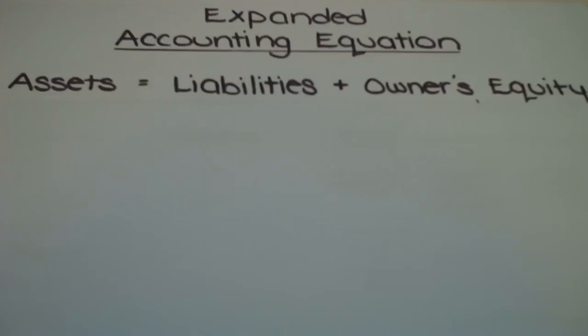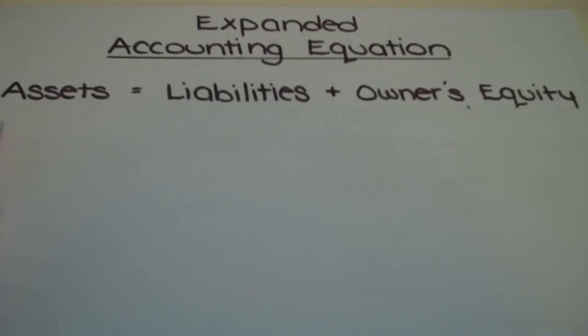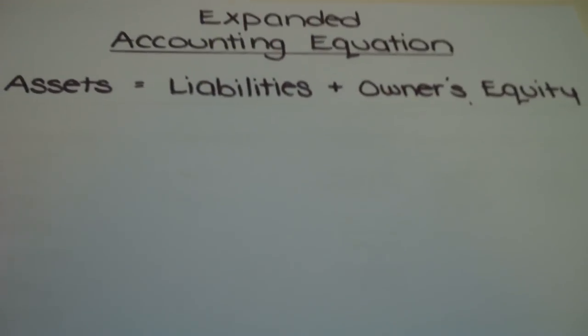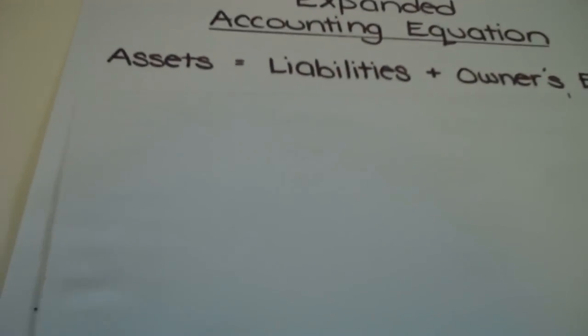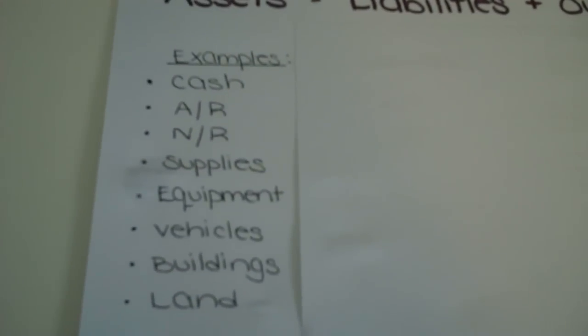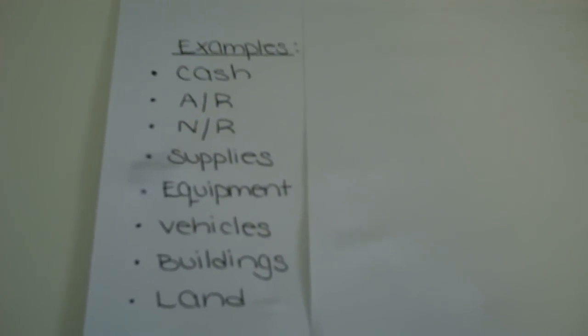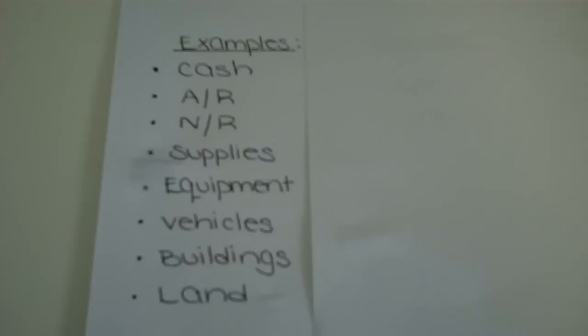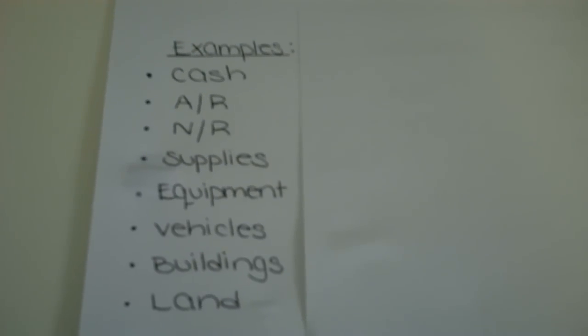So let's review. Assets, we know those are resources that are owned or controlled by a company, and we have some examples of common assets. Examples include cash, A/R or accounts receivable, money that the company is expecting to receive from its customers.